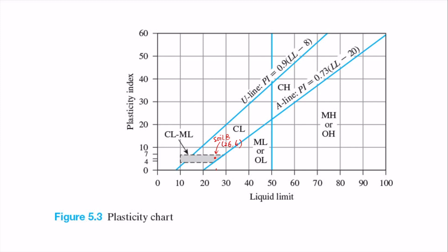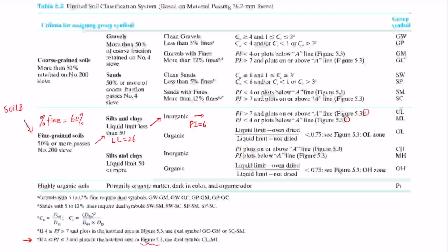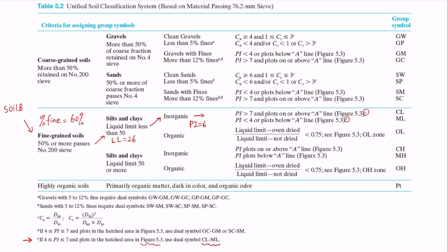So this soil B, indeed, is plotted in this hatched area. And for that, we know the group symbol of soil B is going to be a dual symbol case. So group symbol for soil B is CL-ML. So this is soil B. And now we have the group symbol.